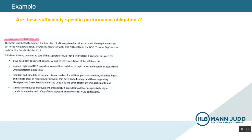So let's look at a third example, again an extract from a grant agreement. It states that the grant is designed to support the transition of NDIS registered providers to meet certain requirements, and that it is designed to drive consistent regulation, support providers to meet the conditions of registration, maintain and stimulate strong and diverse markets, and stimulate continuous improvement among NDIS providers. Again, this information is all very general and I would put it in the high-level goals and objectives category. This particular extract is from a template agreement used for various organisations, and thus without being tailored to the specific recipient organisation, it's unlikely to contain sufficiently specific performance obligations.